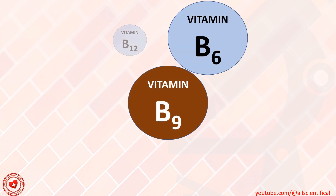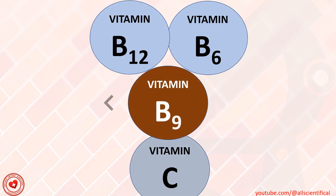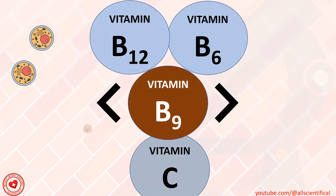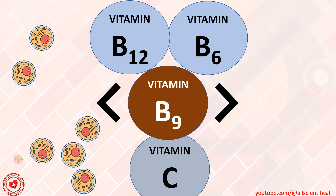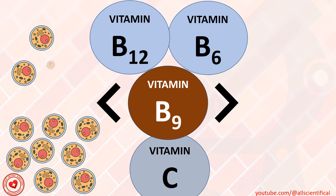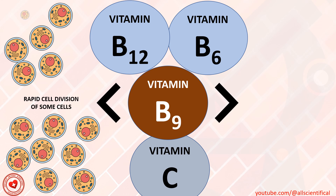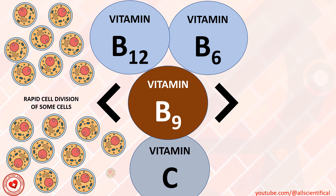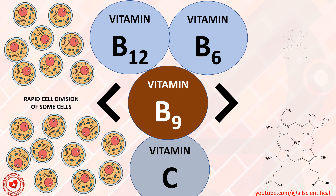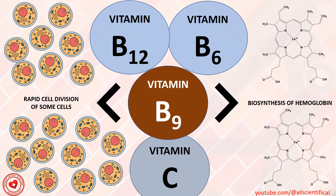Together with vitamins B12, vitamin C and B6, vitamin B9 is necessary for the rapid cell division of some cells, as well as in the biosynthesis of hemoglobin.